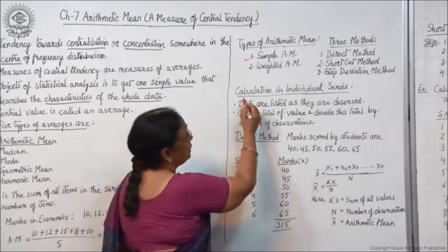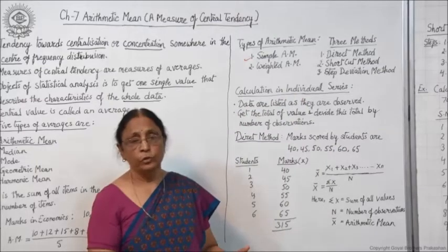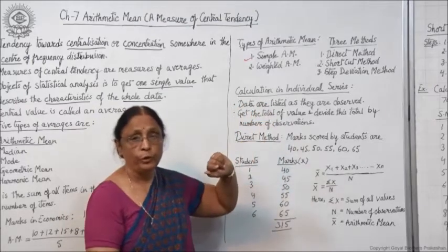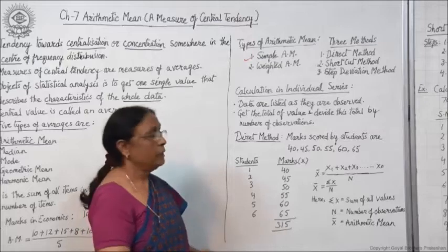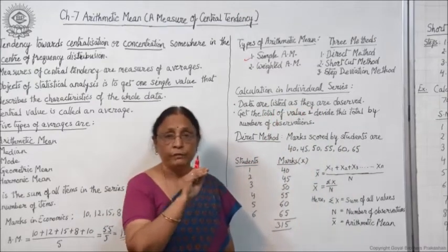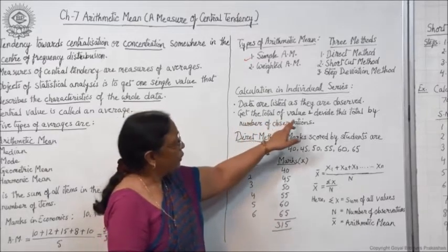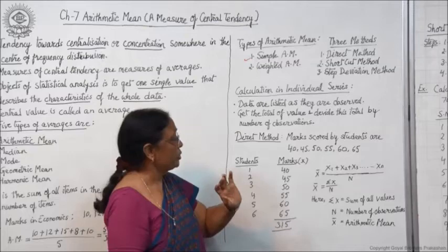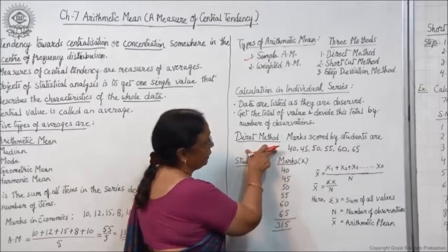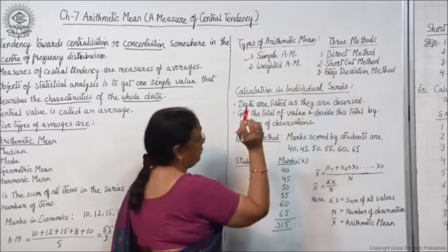We will look at the calculation of arithmetic mean in individual series first, then move to discrete and continuous series. In individual series, individual items are given with no frequencies, so data are listed as they are observed. You have to note down all the data, get the total of the values, and divide this total by the number of observations. We will first apply the direct method, then the shortcut method, then the step deviation method.